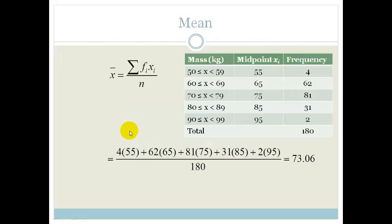Now, the definition of the mean is equal to the sum of fi xi divided by n, where this is the frequency, and this is the midpoint. So what we're saying is that the mean is equal to divided by the total. In other words, what we're going to do is we're going to go 4 times 55 plus 62 times 65 plus 81 times 75 plus 31 times 85 plus 2 times 95 divided by the total number of people.